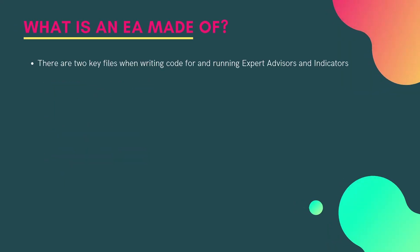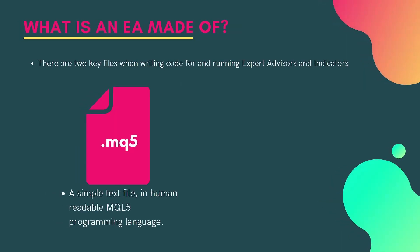When you're coding an EA, there are two key files. The first file is a .mq5 file — this is a simple text file in a human-readable programming language called MQL5. This is what we'll be writing when making our expert advisor, and with this training course you'll be able to read and understand it.